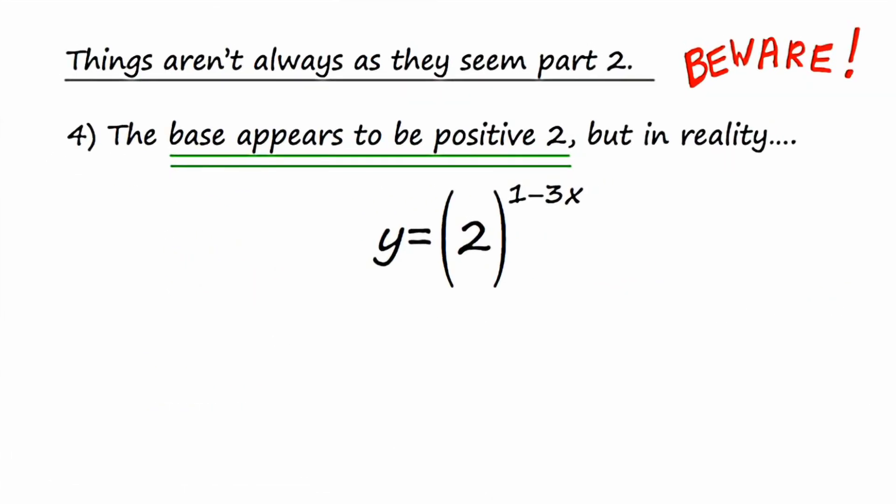Okay, so here's an example of things that aren't always as they seem, part 2, beware. Number 4, the base in this exponential function appears to be positive 2. But in reality, now on the slide before, we said that we can't classify an exponential function as growth or decay, unless the coefficient of the exponent were positive 1. And right now it's a negative 3.